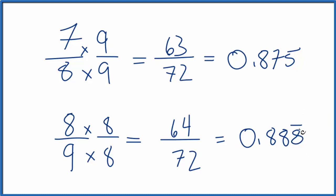So when we compare these, we can see once again, that 8 ninths, that's bigger than 7 eighths, because it's 0.88888. That's bigger than 0.875.